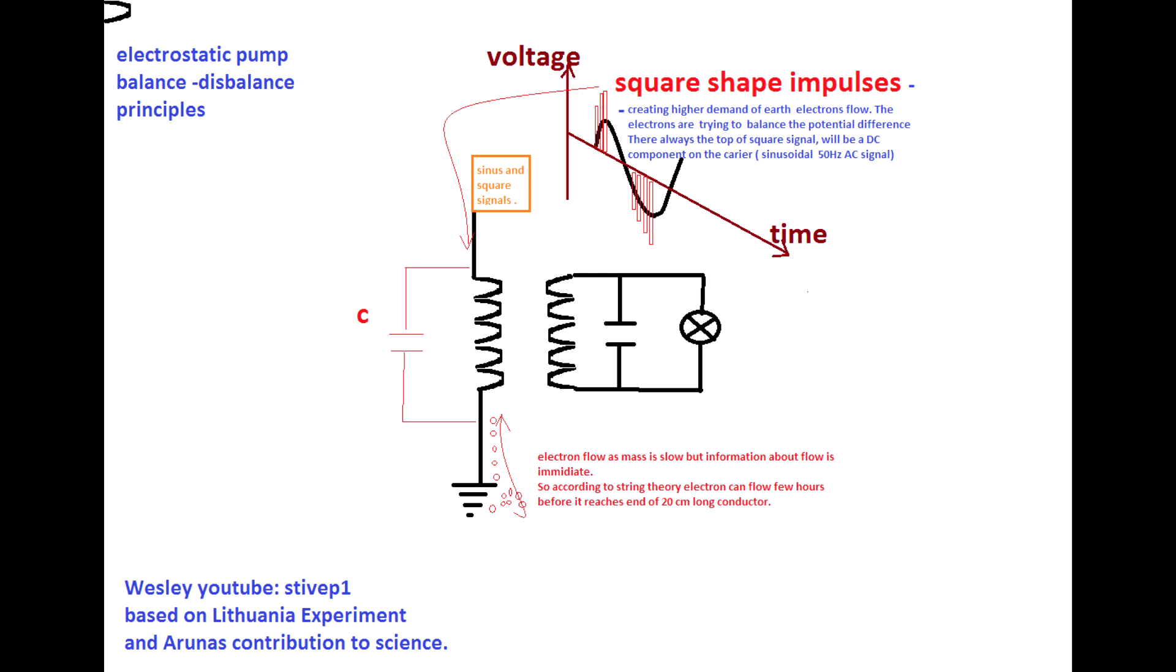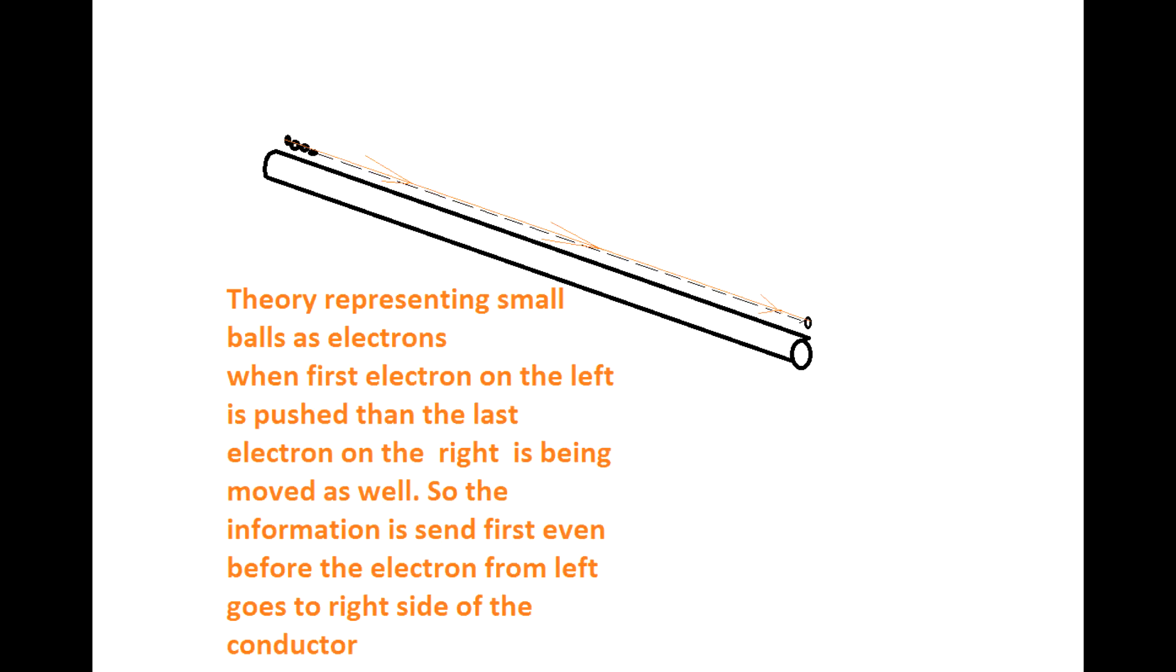And they interact as the DC power on the very top of the amplitude with the electrons from the ground. The whole concept is that the speed of electrons flow from the ground based on the swing theory is very slow. So it depends on the material that you have for 20 centimeters length of the wire. The electron could go as long as a few hours.